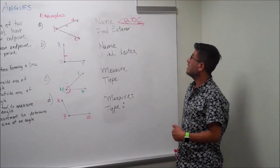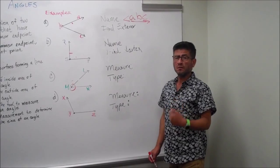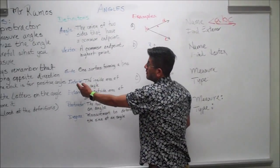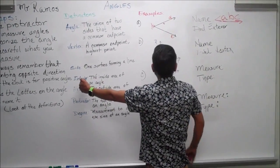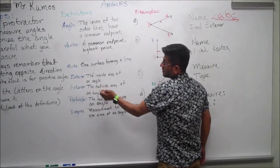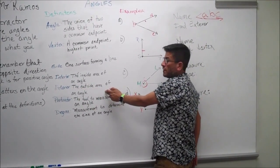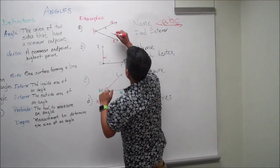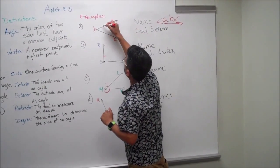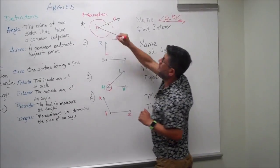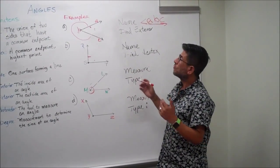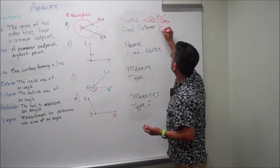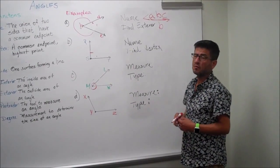Next question: find the exterior of the angle. Remember, look at the definitions — exterior means the outside area of an angle. You've got your angle here, the interior is here, and this will be your exterior. And what letter is that? That will be on letter B — that's where you can find your exterior.